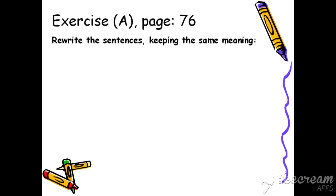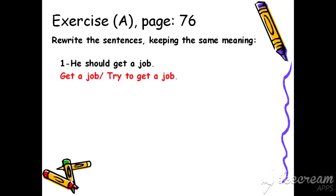You have a homework — you have to do exercise A on page 76: rewrite the sentences keeping the same meaning. The first one: 'He should get a job' — when we want to change it into imperative form, we start with the infinitive verb: 'Get a job' or 'Try to get a job'. يعني أحصل على عمل أو حاول أنك تحصل على وظيفة.